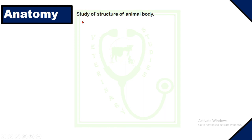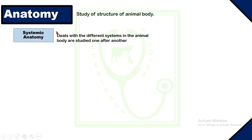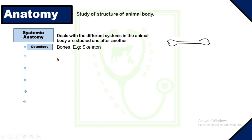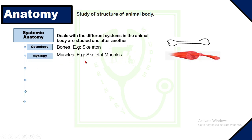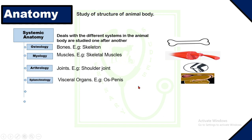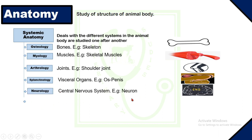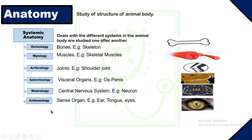As we discussed in our last lecture, veterinary anatomy deals with the study of the structures of the animal body — structures which we can see with our naked eye. Veterinary anatomy includes systemic anatomy, which deals with the anatomy of the different systems of the animal body separately. Systemic anatomy divides into osteology, myology, arthrology, splanchnology, neurology, and esthesiology.